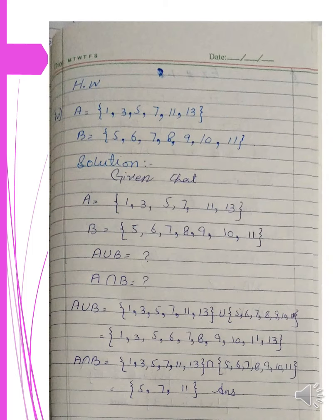For part 4, set A has 1, 3, 5, 7, 11, 13 and set B has 5, 6, 7, 8, 9, 10, 11. So A union B combined gives 1, 3, 5, 6, 7, 9, 10, 11, 13. For A intersection B, the common elements are 5, 7, 11.